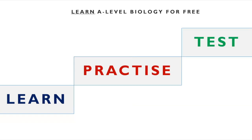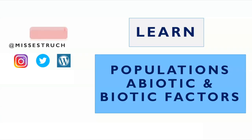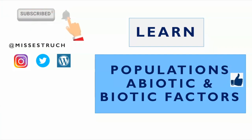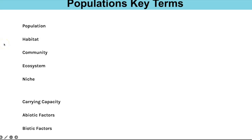Hello everyone and welcome to Learn A-Level Biology for free with Ms. Estrich. In this video I'm going to be going through Topic 7: Populations, Abiotic and Biotic Factors. For this part of Topic 7, there are a lot of key terms that can come up as just one or two mark questions in the exam, so these would be great to turn into flashcards or just to test yourself. You can screenshot and take a copy of this table.